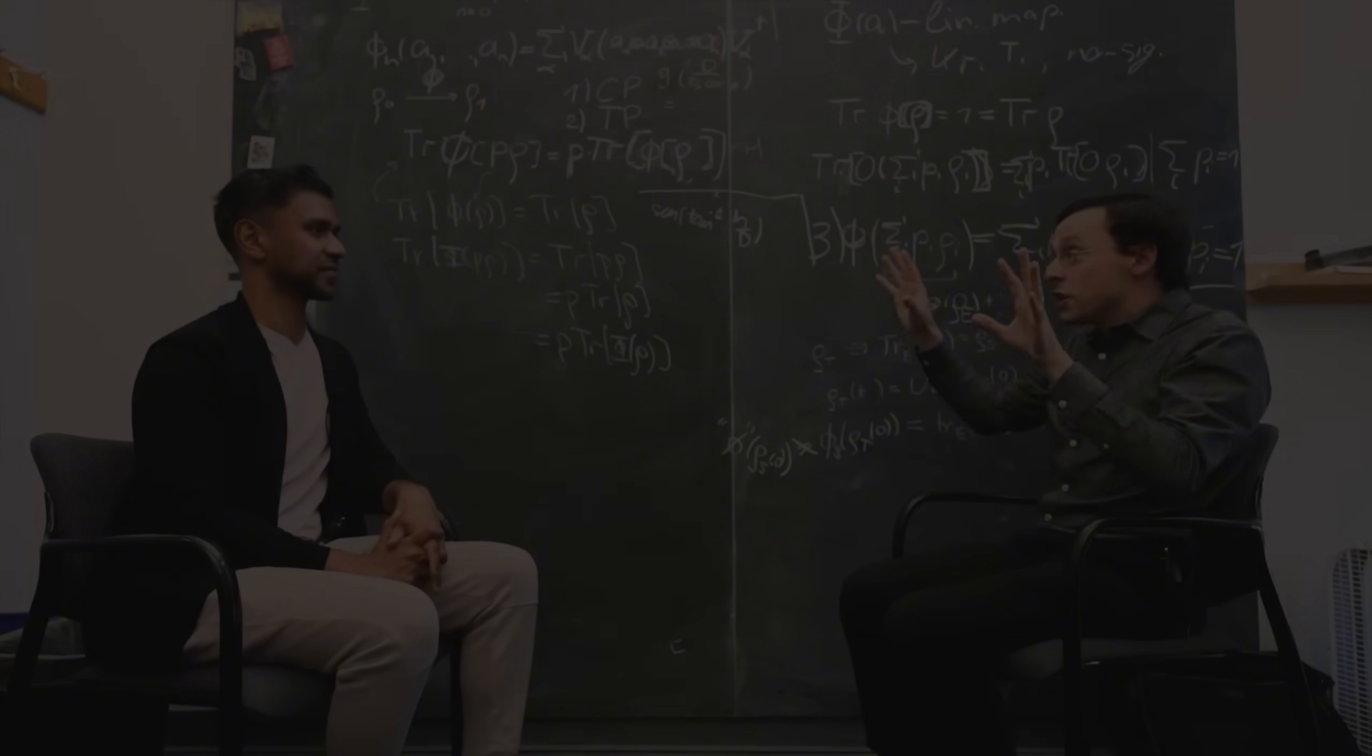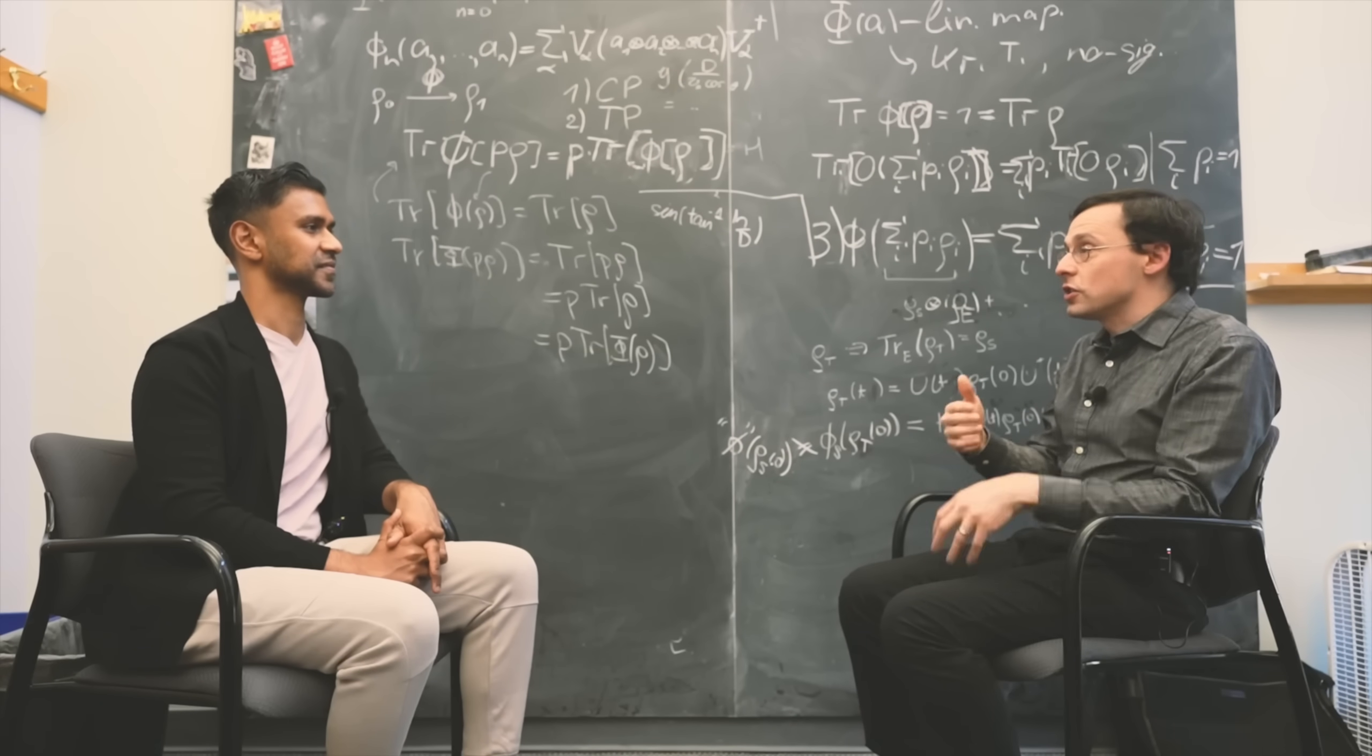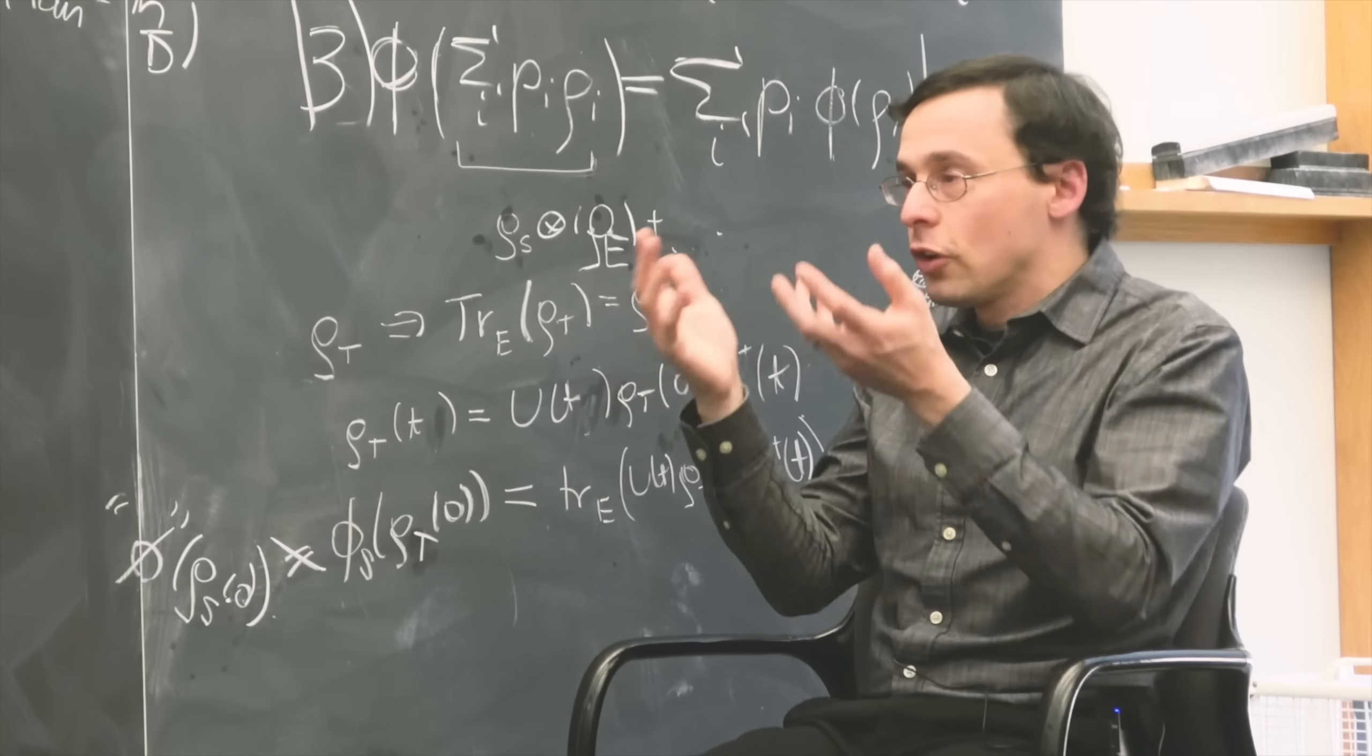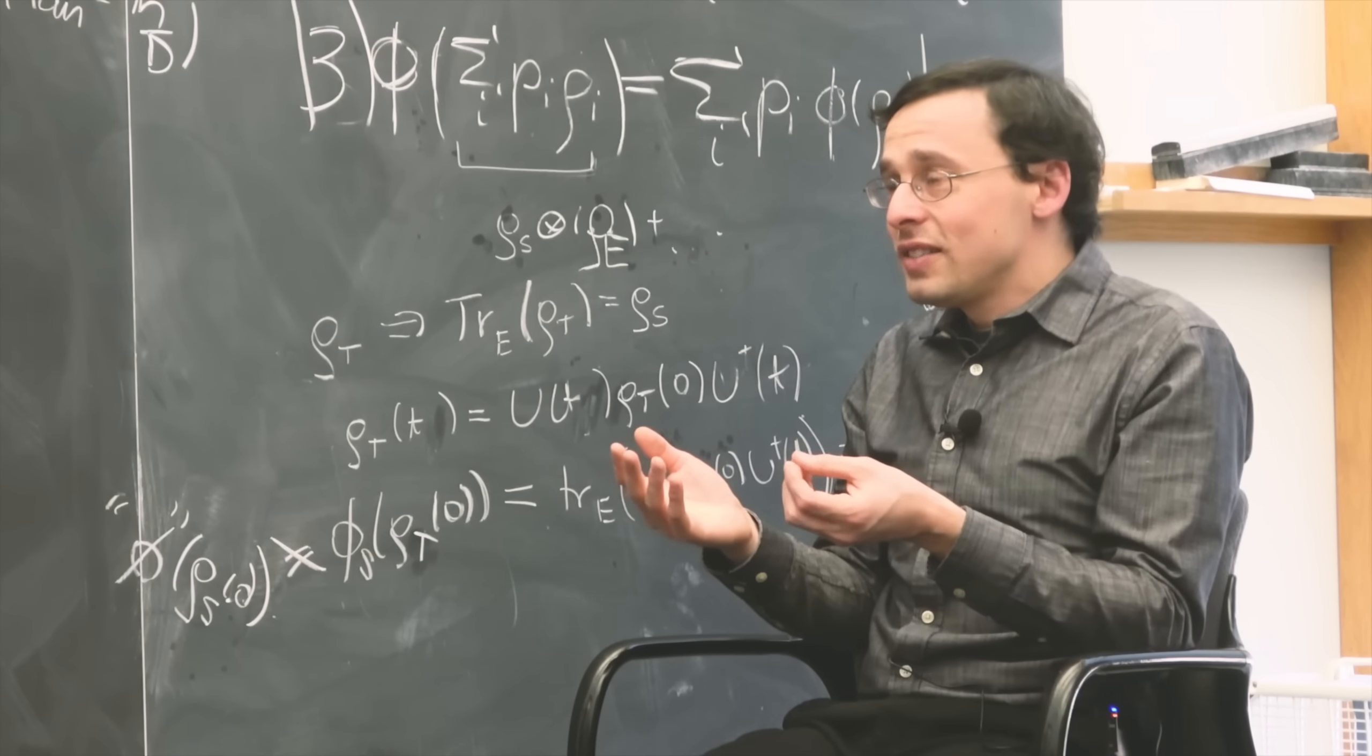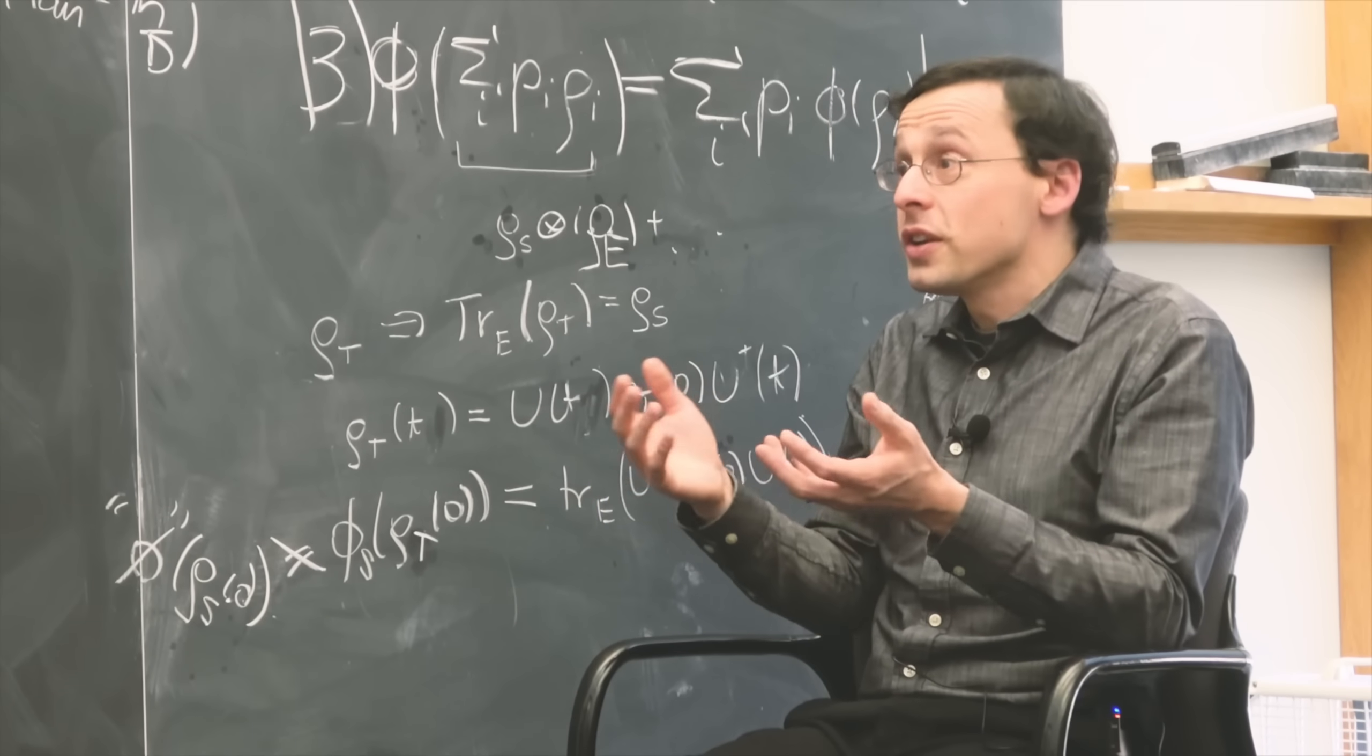Is there an object out in the world evolving according to this partial differential equation, the Hamilton-Jacobi equation, the equation satisfied by this principle function, this integrated kinetic minus potential energy? I think most physicists would say no. They would say that it's just a mathematical convenience, an appurtenance of the theory.